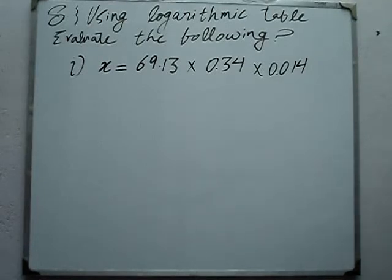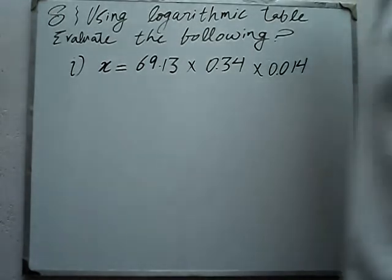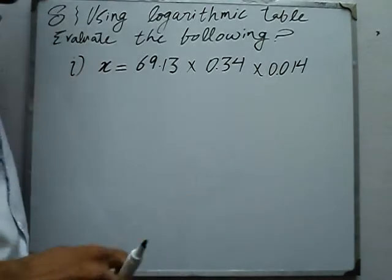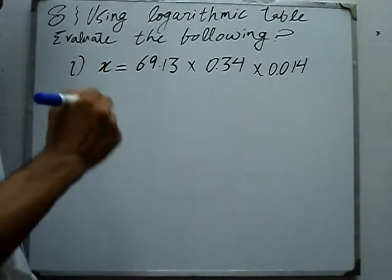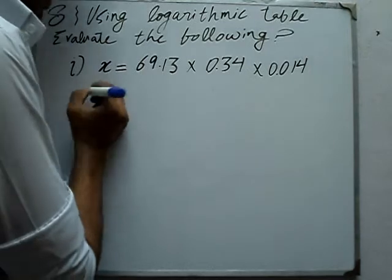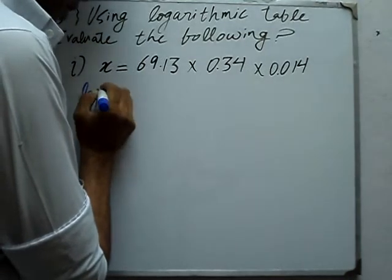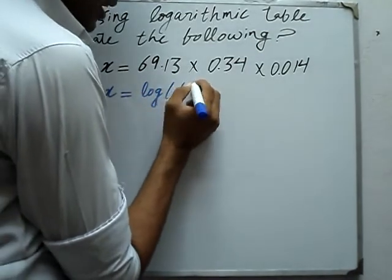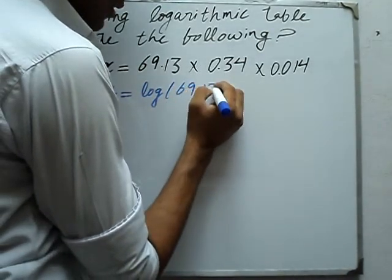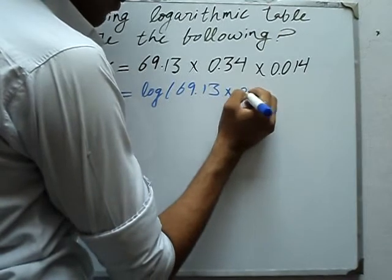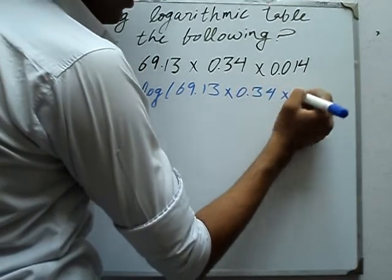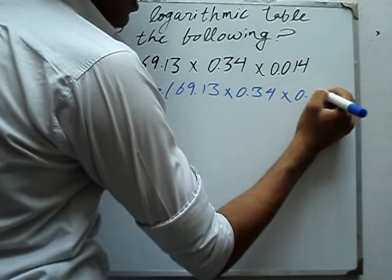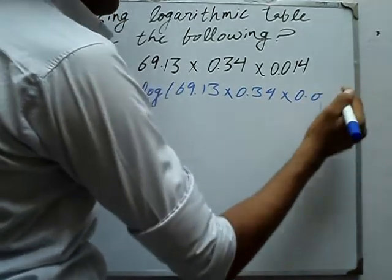Question number 8, Part 1: Using logarithmic tables, evaluate the following. Part 1: x is equal to 69.13 into 0.034 into 0.0014. Log of x is equal to log of 69.13 into 0.034 into 0.0014.